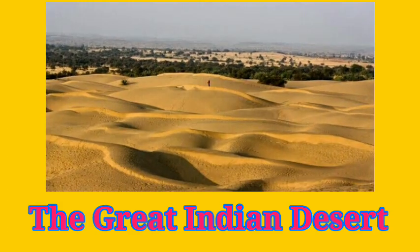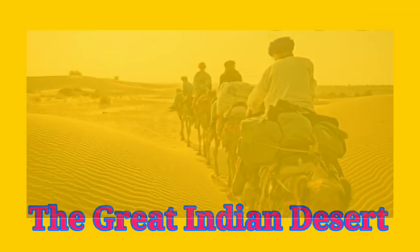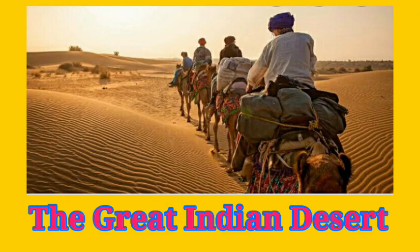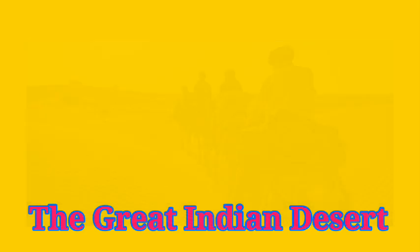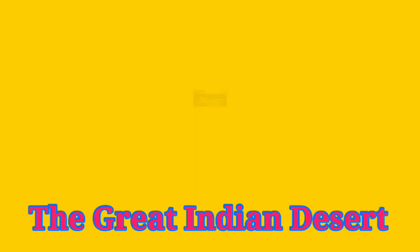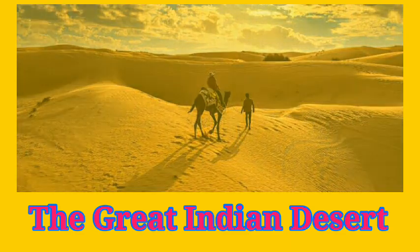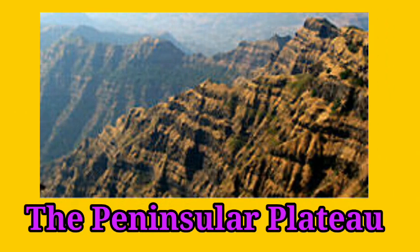The next feature is the Indian Desert, also known as the Great Indian Desert or Thar Desert. It is situated in the western part of India, in western Rajasthan, towards the western margins of the Aravalli Hills. It is an undulating sandy plain covered with sand dunes. This region sees very low rainfall — below 150 millimeters per year.